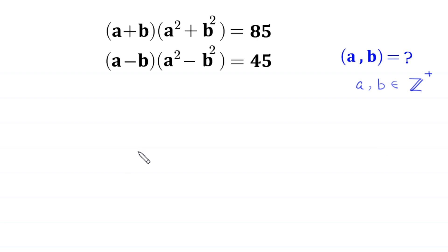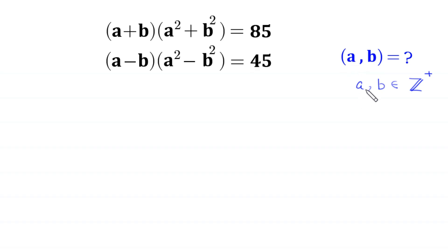Hello everyone, you are welcome. We will solve this nice system of equations: (a + b)(a² + b²) = 85 and (a - b)(a² - b²) = 45. Our job is to find all possible values of a and b such that a and b are positive integers. Let's call these equation 1 and equation 2.